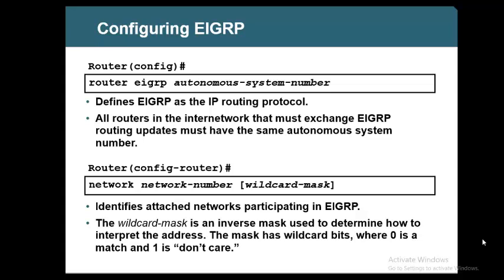In that way you have two groups within one office. If you want to communicate between these two groups, you can redistribute — take the route from one autonomous system and redistribute it to another. This is what is called merging two autonomous systems. But instead of redistributing, I recommend changing the routers to use the same autonomous system number. Simply merge them by giving the same autonomous system number instead of different numbers.